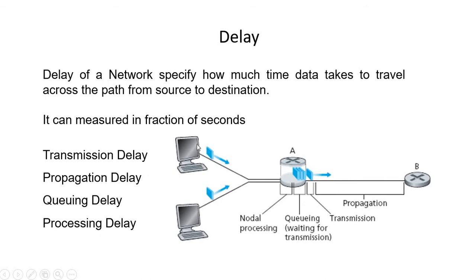Looking at the figure, there are two desktop systems sending data towards a router. There are two routers: router A and router B. We are going to measure the delay along the path from router A to router B — that is, between point A and point B.